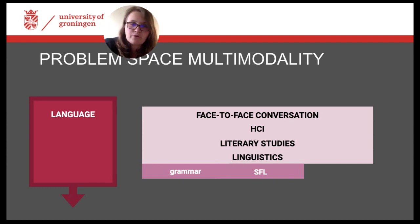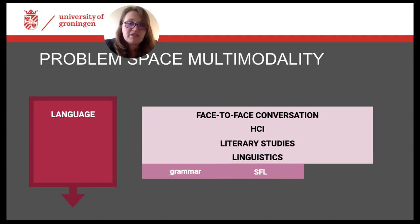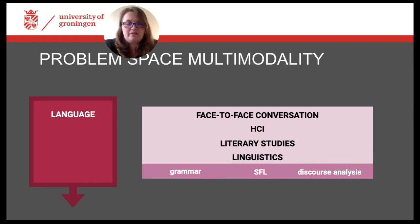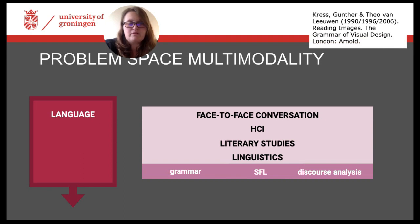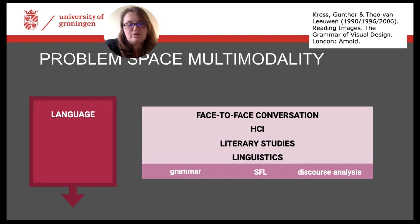Within Systemic Functional Linguistics, language is always seen as functioning within the social context and at the same time as being shaped by this contextualization. Therefore, language and other semiotic modes are described with the help of three very general communicative functions, so-called metafunctions, which are attributed to any particular instance of communication. The book I mentioned — Kress and van Leeuwen's 'Reading Images: The Grammar of Visual Design' — was published first in 1990, then in 1996, and a second edition in 2006.